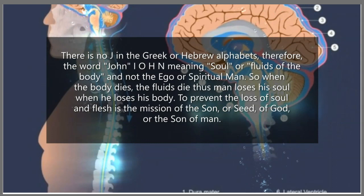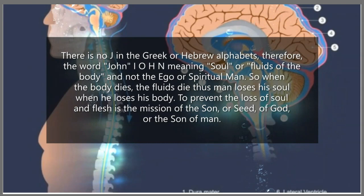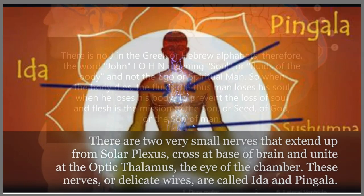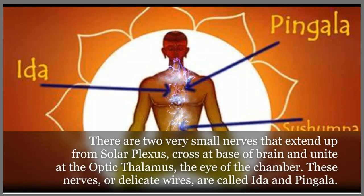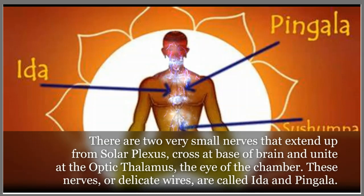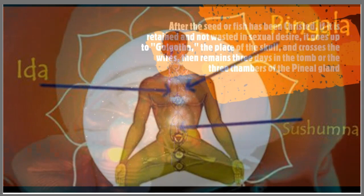So when the body dies, so the fluid dies. Thus man loses his soul when he loses his body. To prevent the loss of soul and flesh is the mission of the son, or the seed, of God — or the son of man. There are two very small nerves that extend up from the solar plexus, cross at the base of the brain, and unite at the optic thalamus, the eye of the chamber. These nerves, or delicate wires, are also called the ida and pingala, or the vagus nerve.